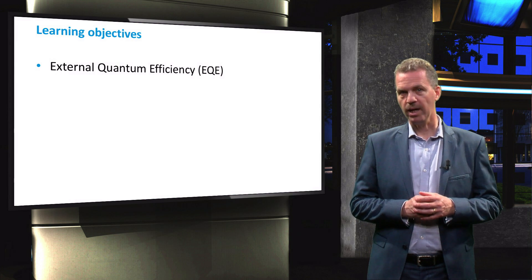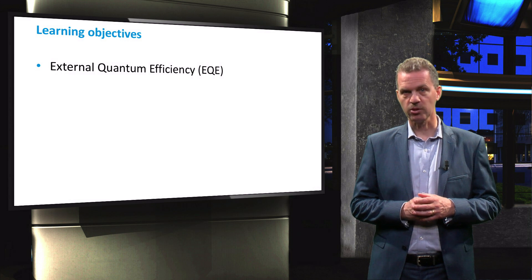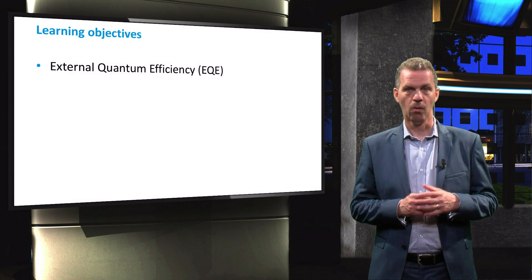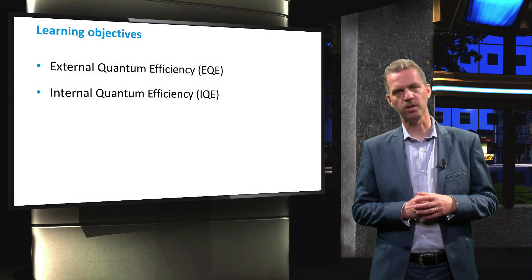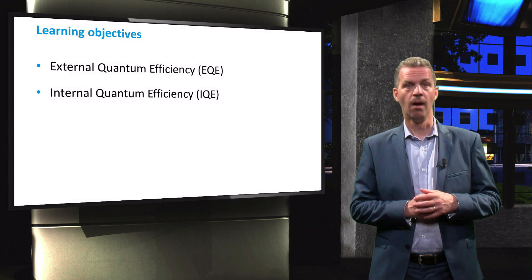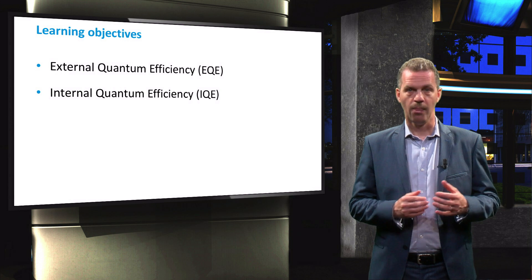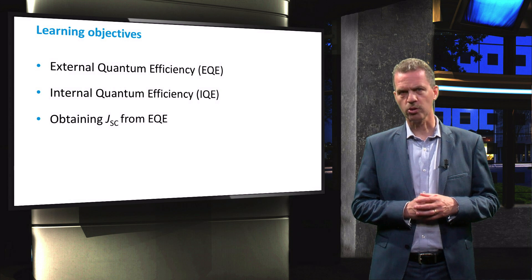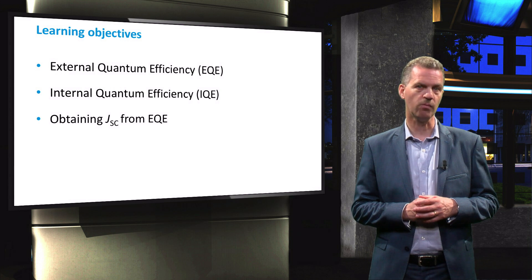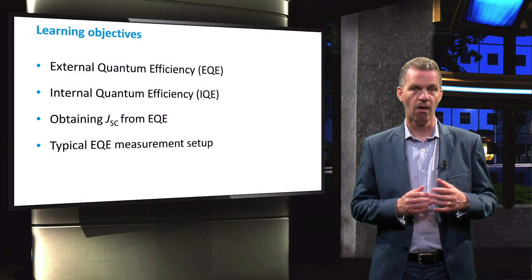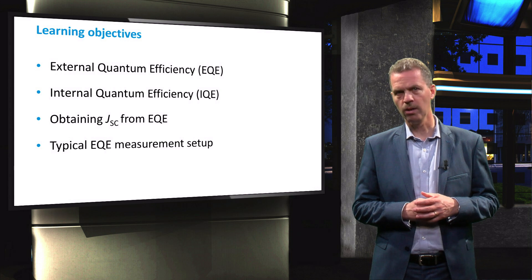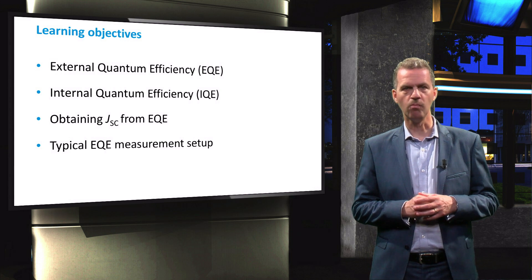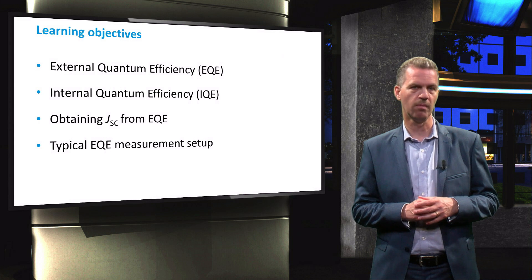We will start by introducing the definition of the external quantum efficiency, which can be transformed into the internal quantum efficiency, or IQE, by a simple step. Next, we will show how the short-circuit current density of the solar cell can be obtained from the EQE curve. Finally, we will show a schematic overview of the typical setup and go into more detail on the data acquisition method.